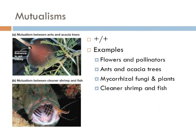Cleaner shrimp have a mutualistic relationship with certain fish species. They clean the inside of the fish's mouth, removing any parasites that may exist there. So the shrimp gets food and the fish gets the parasites removed — it's a mutualistic relationship.